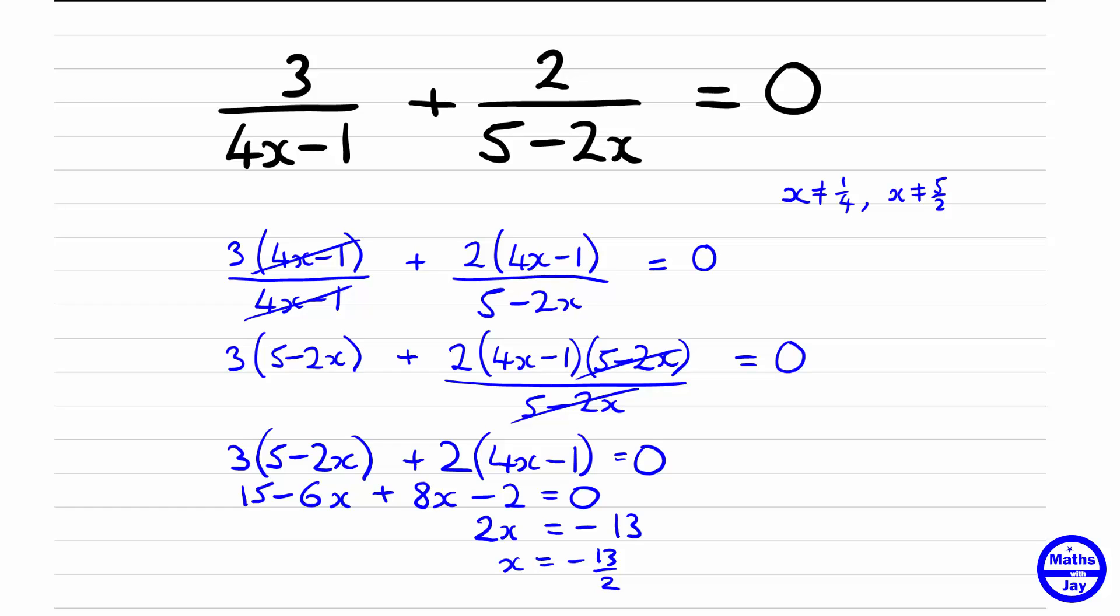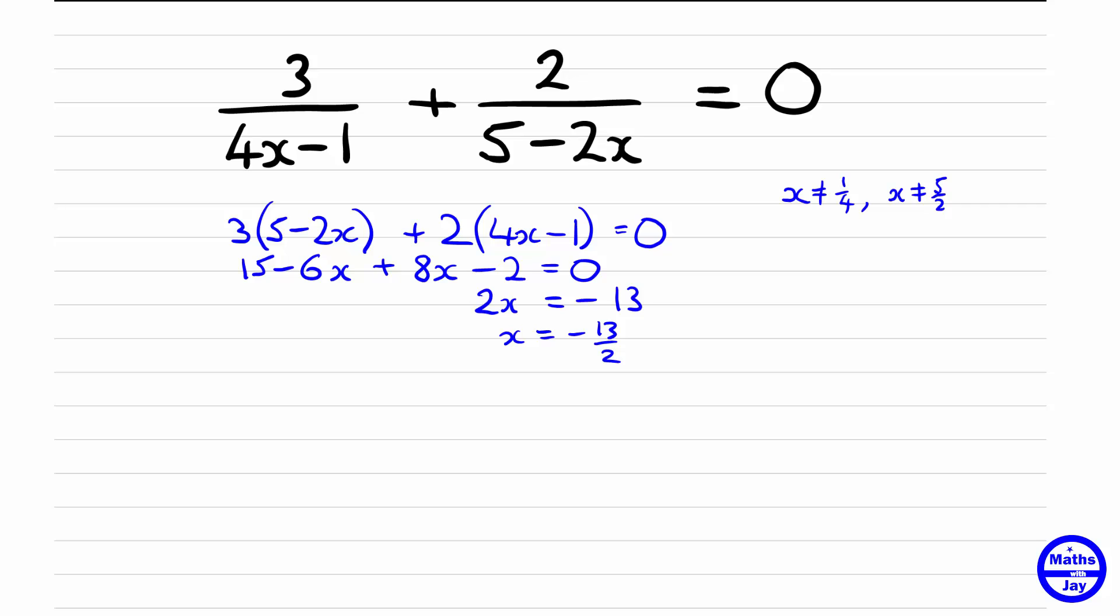And then of course you'd want to check your answer. First of all we just notice that this value doesn't make either of the denominators equal to zero because it's not a quarter, it's not 5 over 2. And then we would just substitute that value in to the left-hand side.